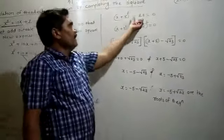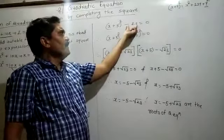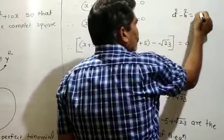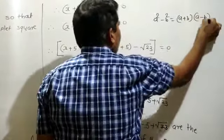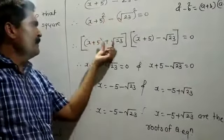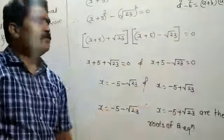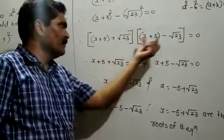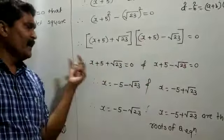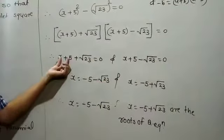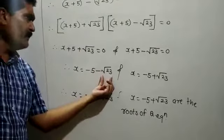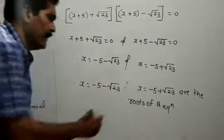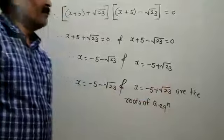Writing the equation as (x + 5) squared minus 23 equals 0, express 23 as (√23) squared, then apply the identity a squared minus b squared equals (a + b)(a − b). Here a is (x + 5) and b is √23. Setting each factor to zero and transposing: x equals −5 − √23 and x equals −5 + √23 are the roots of the given quadratic equation.